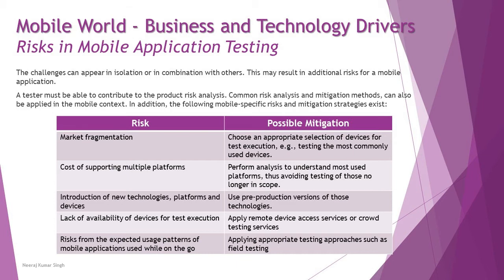The second risk is the cost of supporting multiple platforms. You may not be able to target every single platform, which can be expensive, and each platform may have different versions. You may have a limited budget to test all possible versions and platform providers. The mitigation is to perform analysis to understand the most-used platforms, thus avoiding testing of those which are no longer in scope.